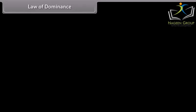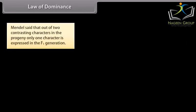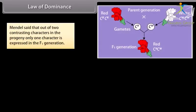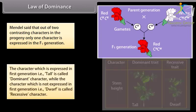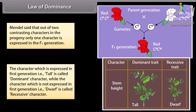Law of Dominance: Mendel said that out of two contrasting characters in the progeny, only one character is expressed in the F1 generation. The character which is expressed in F1 generation — that is, tall — is called the dominant character, while the character which is not expressed in F1 generation — that is, dwarf — is called the recessive character.